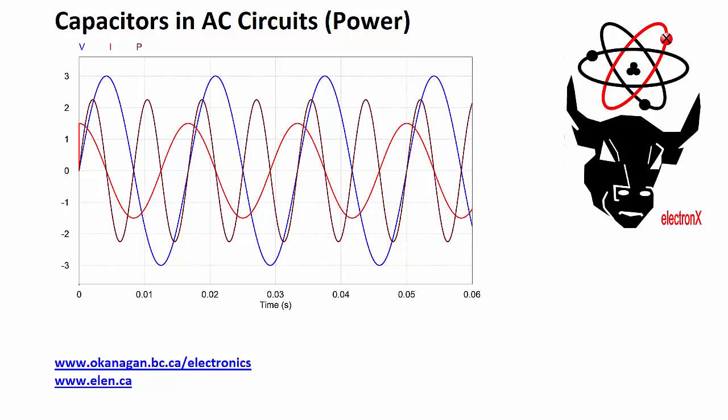In AC circuits, ideal capacitors do not use any power. They actually just cycle power back and forth between the source and the capacitor. When current is coming out of the source, it's charging the capacitor, building up the energy. And when current is going back towards the source, the capacitor is discharging and losing energy. So even though capacitors don't actually use up any power, we can quantify how much power is moving back and forth between the source and the capacitor. And this type of power is called reactive power.